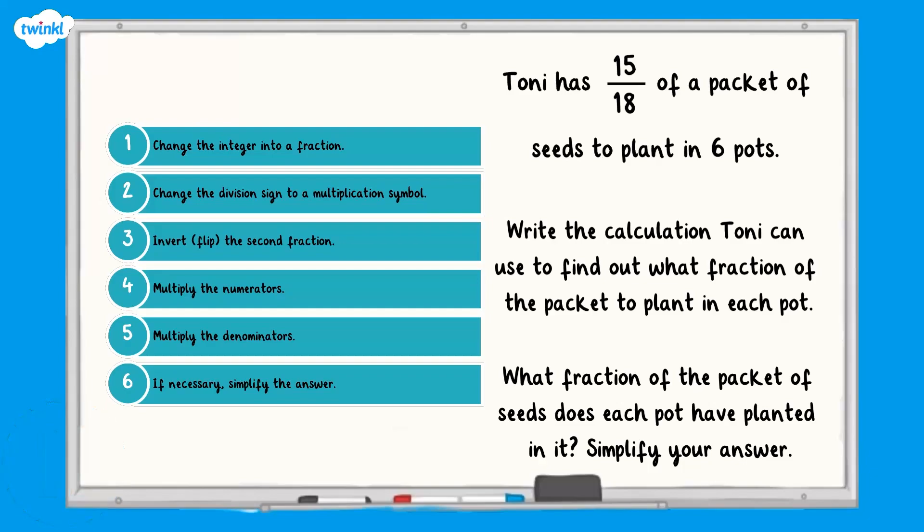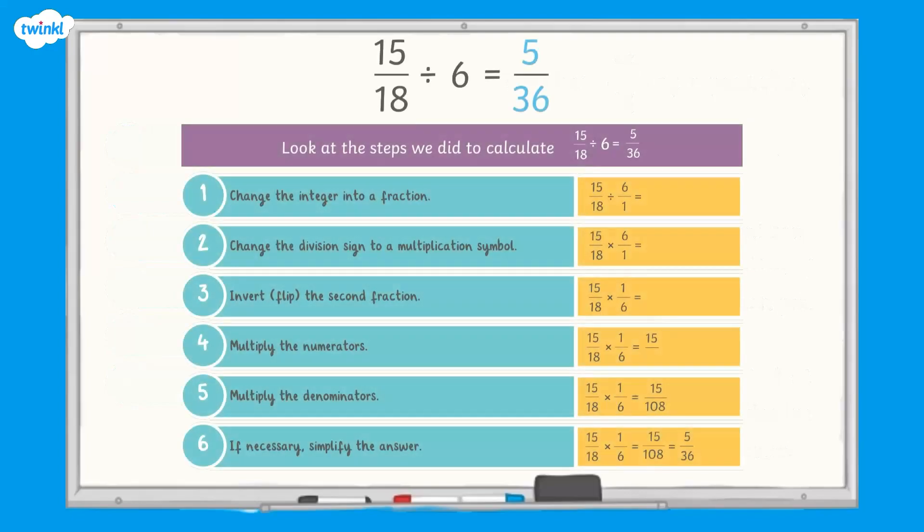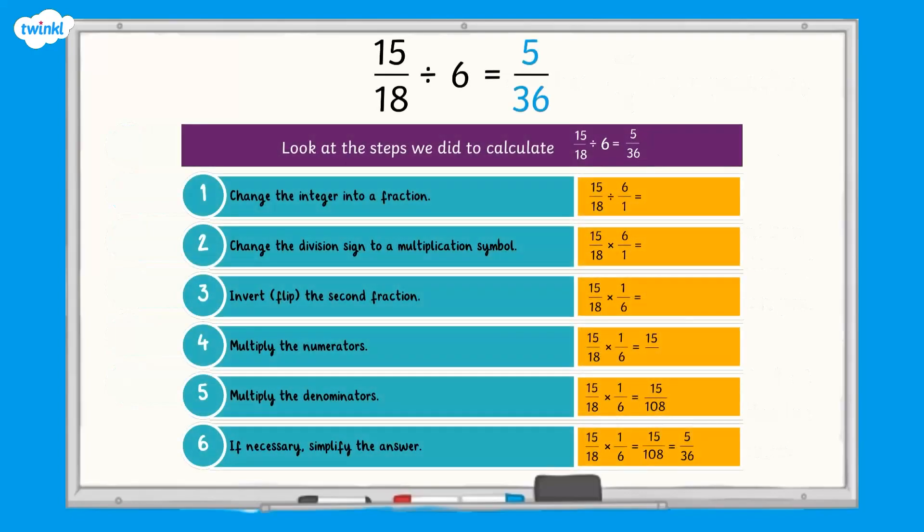How did you get on? Let's check your answer. Tony needs to calculate 15 eighteenths divided by 6, which equals 15 one hundred and eighths. This can be simplified to 5 thirty-sixths. If you want to take a closer look at the steps, pause again.